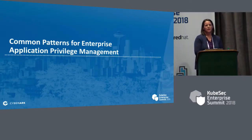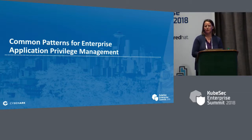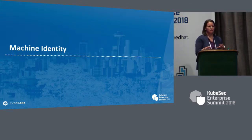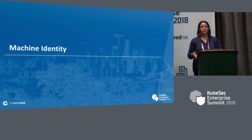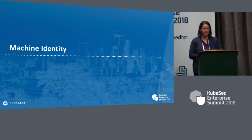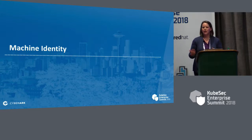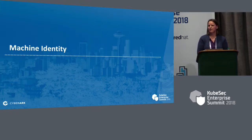Let's talk about some common patterns that we and our customers have seen for managing enterprise application privilege management. The first set of ideas is around machine identity — sometimes called service identity or workload identity. The language is still evolving, but the idea is similar to human identity. We're all comfortable with the idea of human identity: we have usernames, email addresses, driver's licenses, and even biometric data. Machines have similar data that can be used to identify them — so how do we leverage that?